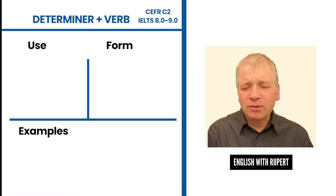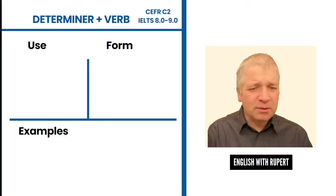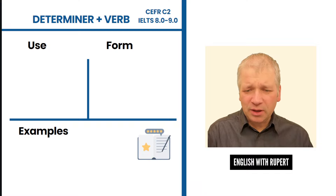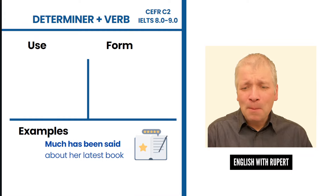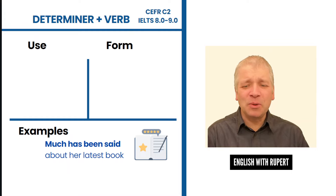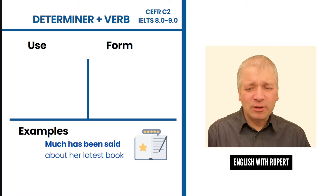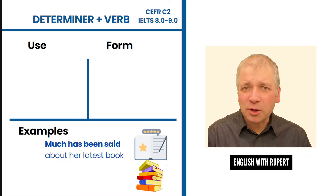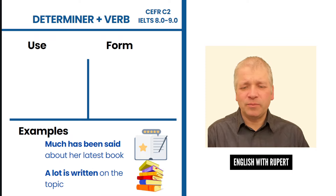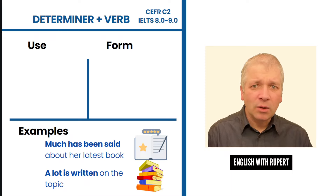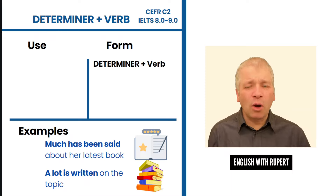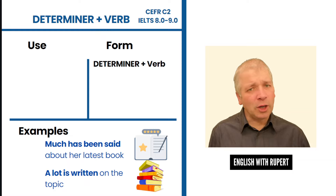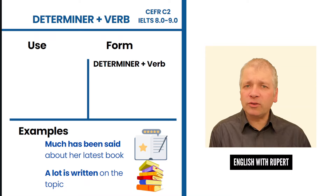Let's look at one more situation where advanced determiners can be used. Here is a book with five-star reviews, and someone says: 'Much has been said about her latest book.' Here's another similar phrase — perhaps all the books on a particular topic in your library — and this is written: 'A lot is written on the topic.' What's interesting here is the determiner comes first and takes the place of the subject — it becomes a subject itself: 'much' followed by the verb phrase.